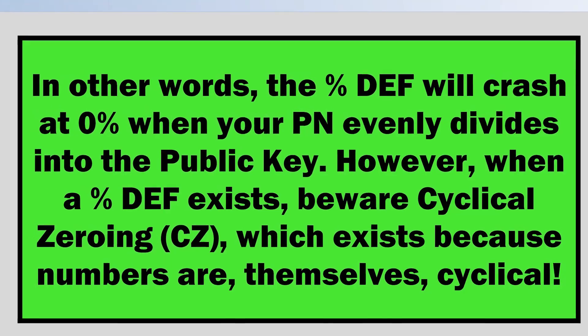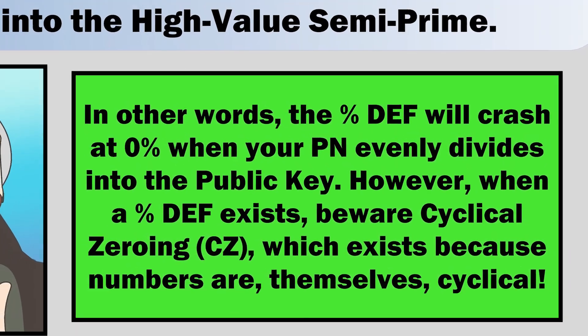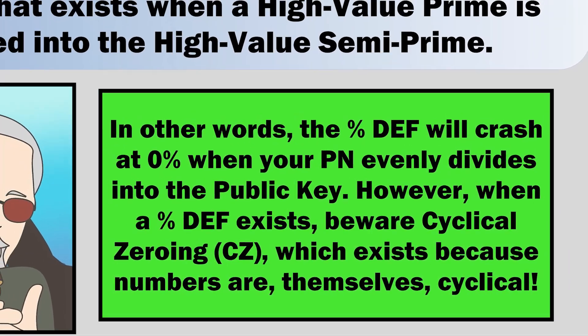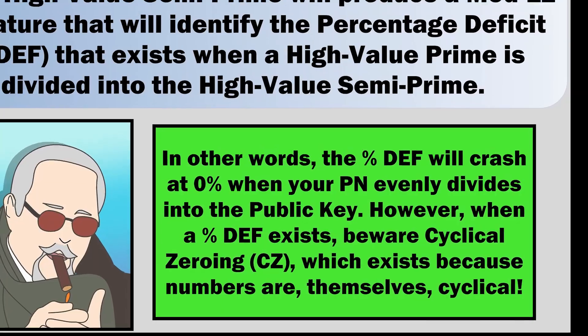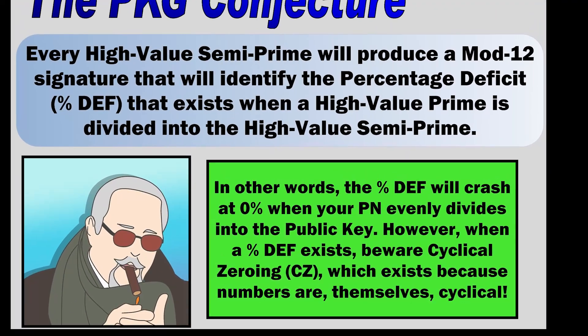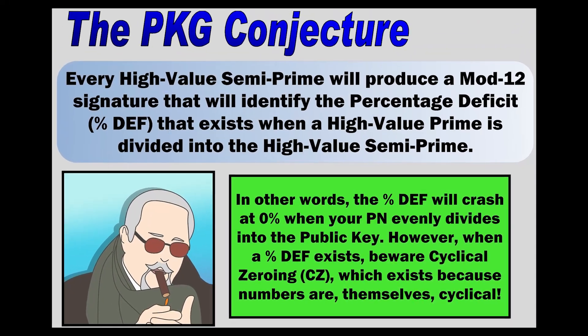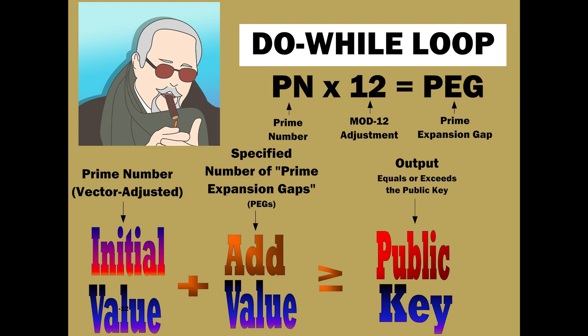However, when a percentage deficit exists, beware cyclical zeroing, which exists because numbers are themselves cyclical. To begin, choose a prime number. Using modulo 12, adjust the prime number so that its product is in the same vector as the public key. That is your initial value.